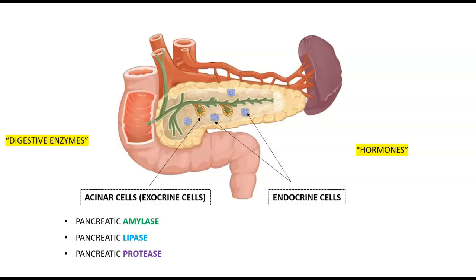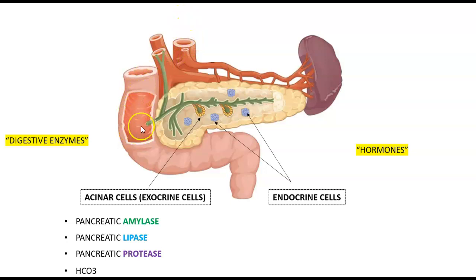There is also bicarbonate released by the acinar cells. Because of the high acidic contents released from the stomach into the first part of the duodenum, bicarbonate serves as an alkaline solution that neutralizes this acidity so that you don't develop duodenal ulcers.